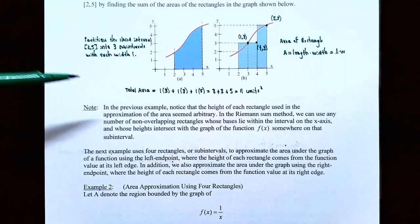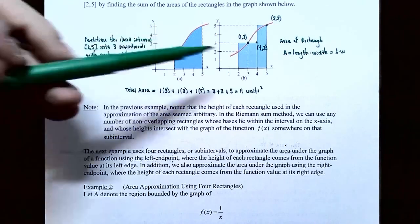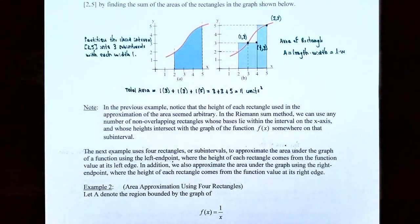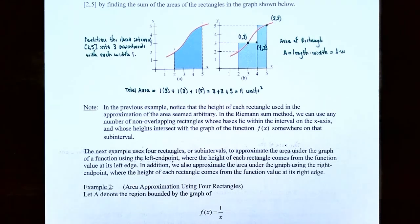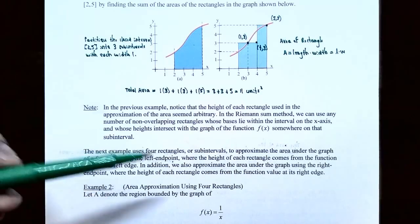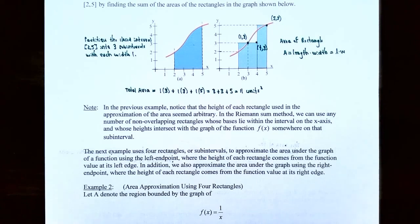In that previous example, the heights of the rectangles — 3, 3, and 5 — seemed arbitrary. In the Riemann sum method, we can use any number of non-overlapping rectangles with the same width, whose bases lie on the closed interval on the x-axis. In the next example, we're going to use 4 rectangles to approximate the area under the graph using the left endpoint — where the height of each rectangle comes from the function value at its left edge — and also using the right endpoint, where the height comes from the function's value at the right edge.